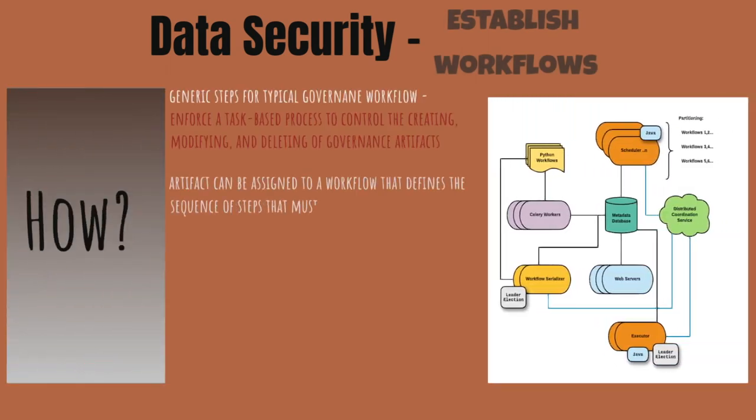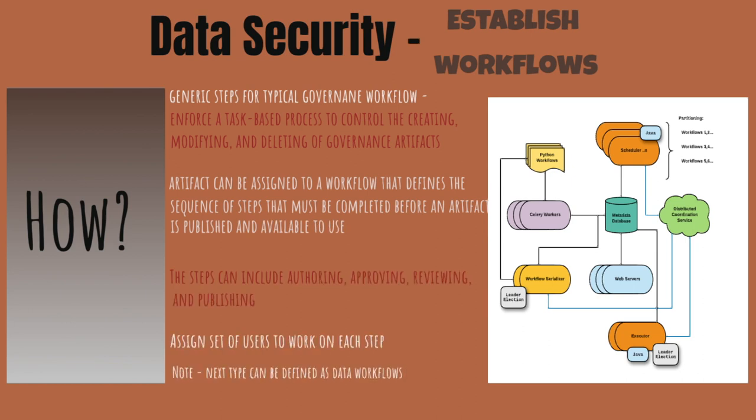Generic steps for a typical governance workflow include enforcing a task-based process to control the creating, modifying, and deleting of governance artifacts. Artifacts can be assigned to a workflow that defines the sequence of steps that must be completed before an artifact is published and available to use. The steps can include authoring, approving, reviewing, and publishing, with a set of users assigned to work on each step.